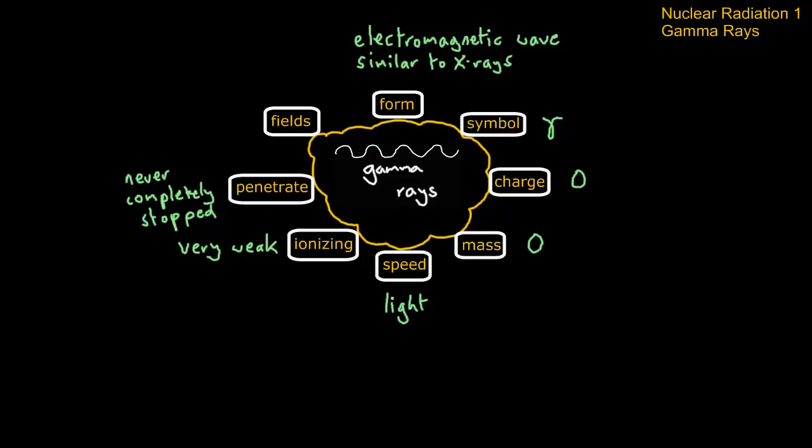They have no charge so they're not deflected by magnetic or electric fields. If you remember the alpha particles in pink are deflected downwards by that magnetic field and a lot less deflection of the beta particles.